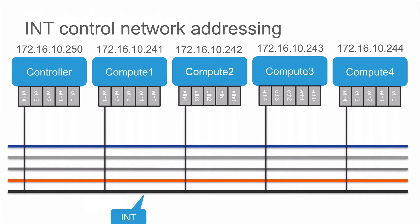With the INT network, we are using a set of IP addresses that we really suggest you do not change. The controller is configured to come up on the 10.50 network, and addresses 241, 242, 243, 244 are proposed for compute 1, 2, 3, and 4 nodes respectively. When you install your images, these IP addresses are already there. Please do not try to reconfigure the controller network — it's not recommended and not supported.